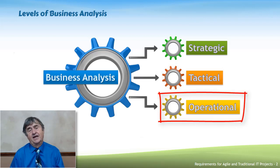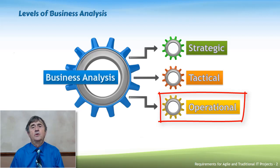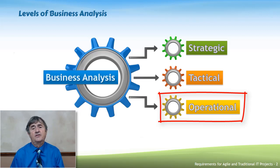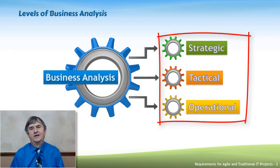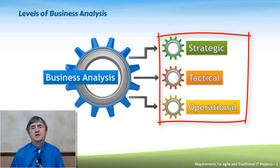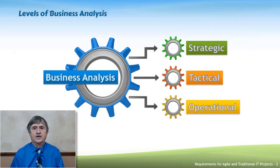Operational business analysis is actually done by everyone in the organization at different points in time. It is when you're dealing with day-to-day life, finding problems, figuring out what needs to change, or actually implementing those changes. These are three very distinct levels of business analysis, and each level has some common tools and techniques, but there are also differences from one organization to the next.